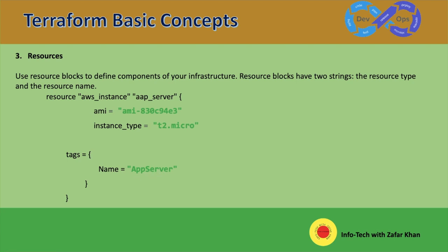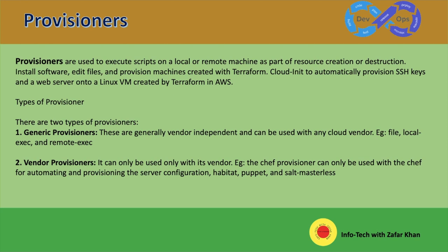Now let's discuss about the provisioner. Provisioners are used to execute a script on a local or remote machine as part of resource creation or destruction. When you are creating a resource, the provisioner is used to execute the script — even during destruction. You can install software, edit files, and provision machines created with Terraform. Cloud-init automatically provisions SSH keys and a web server onto a Linux virtual machine created by Terraform in AWS. There are basically two types of provisioners: generic provisioner and vendor provisioner.